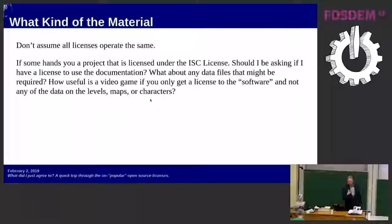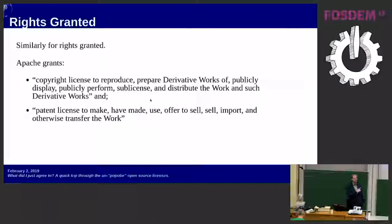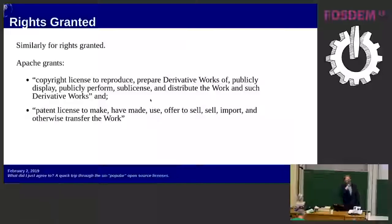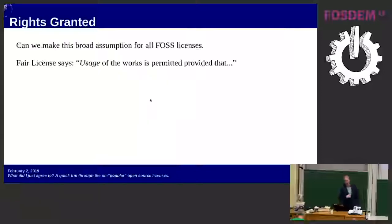Similarly, the rights granted vary. I tend to think all open source licenses provide basically the same rights, with differences only in conditions — but that's not actually true. The Apache License grants both a copyright license and a patent license, giving you all the statutory rights under US copyright. But other licenses, like the FAIR License, literally say: 'Usage of the work is permitted provided that...' The only thing you can do with material under the FAIR License is usage — which is not the same as modifying, distributing, or making copies of it.